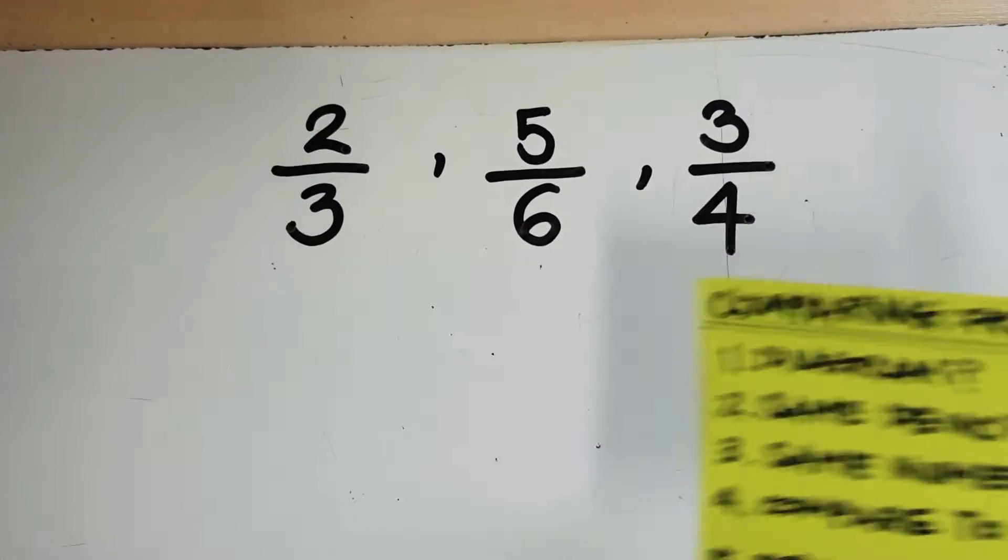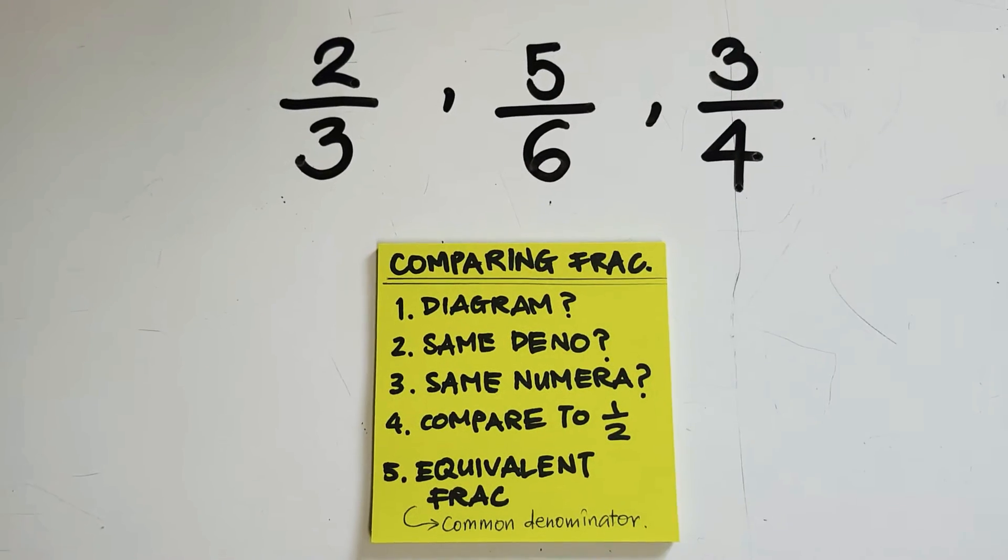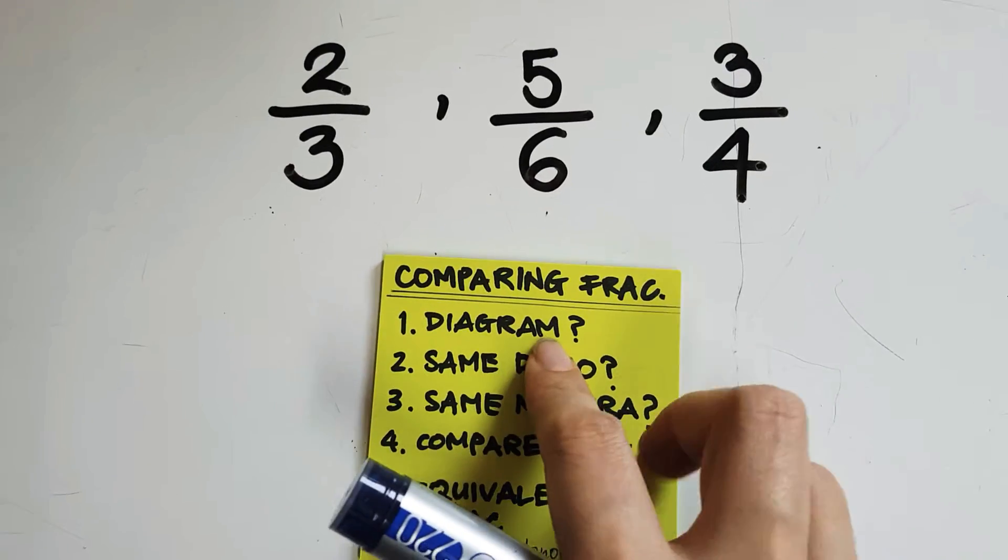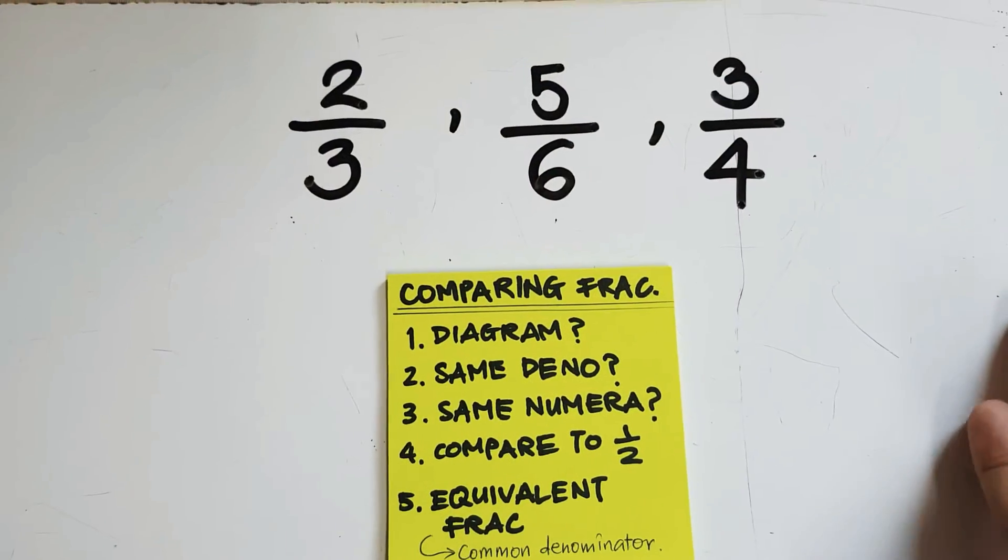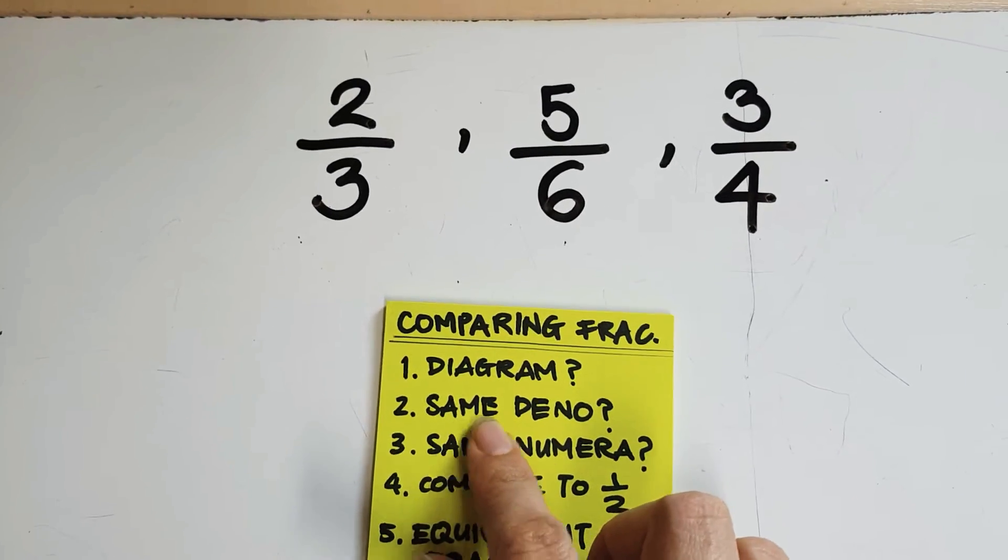Now, we learn in class that there are a few things that we need to do before we start comparing fractions. The first thing we ask ourselves is, do they give us a diagram? We see there's no diagram, there are no pictures here to help us. We ask ourselves, do they have the same denominator?